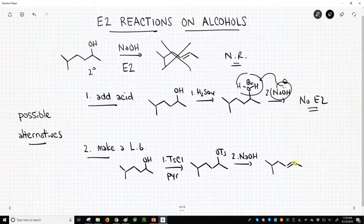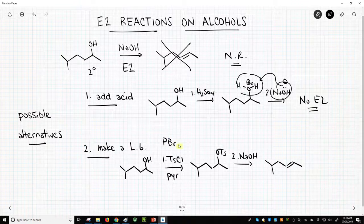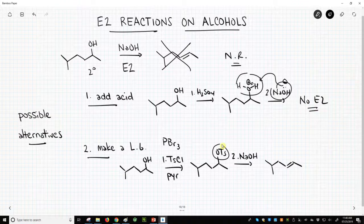Now, tosylates—I think when you first learn tosylates, they seem a little exotic, but you don't have to do a tosylate. We could have instead reacted this with PBr3, and instead of making the tosylate, we would have made a bromide. Yeah, that's fine. We just need a leaving group to do the E2 reaction.